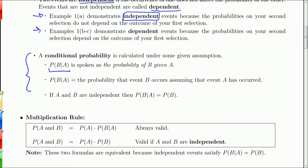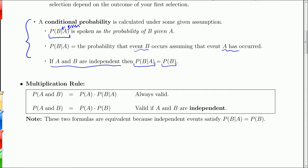If you look at the probability of B given A — the vertical line is the 'given' symbol — it's the probability that event B occurs, assuming that A has occurred. If A and B are independent, meaning the occurrence of one does not change the probability of the other, then the probability of B given A is just the probability of B. The official multiplication rule: the probability of A and B is the probability of A times the probability of B given A.